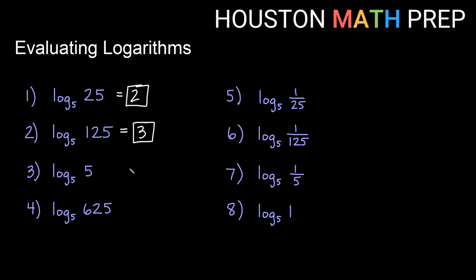So 5 to what power gives us 5? 5 to the first power would give us 5. And then a little bit bigger here, 5 to what power gives us 625? It's 5 times this one so it must be one more copy of 5. So that is 5 to the fourth power gives us 625.